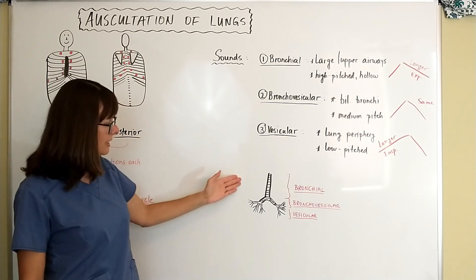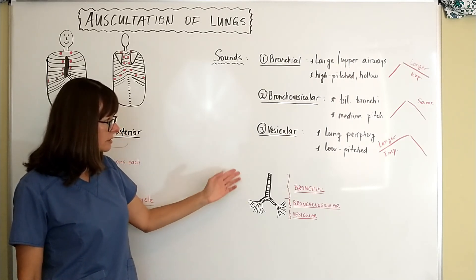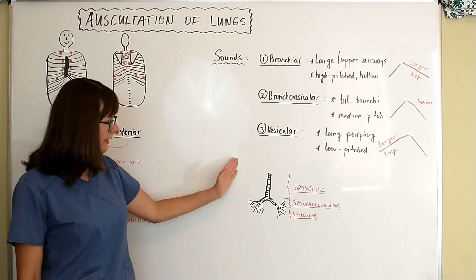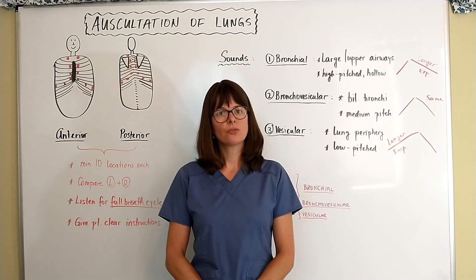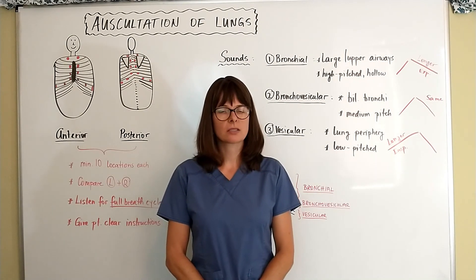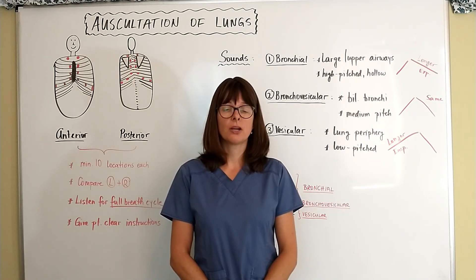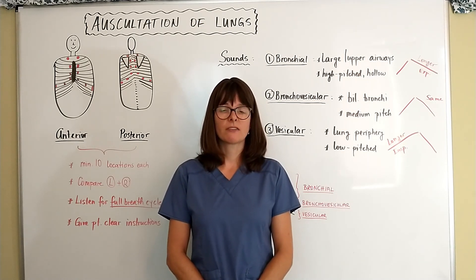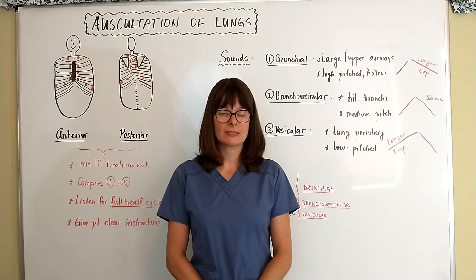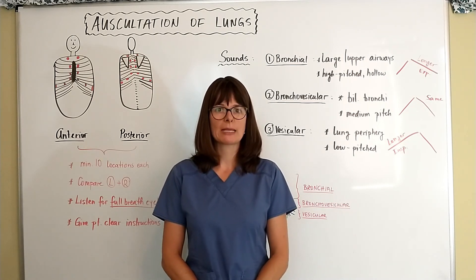Down in the very lower lung fields at the alveoli, we hear vesicular breath sounds, which are in the lung periphery. They are more low-pitched because the airway diameters are very small. The inspiration is longer and the expiration is shorter, because it takes longer for air to enter the lungs. Thank you for watching this video on the auscultation of lung sounds. Please also watch my other videos on auscultating heart sounds and other assessment techniques such as percussion, which you can find in the physical assessment technique playlist.